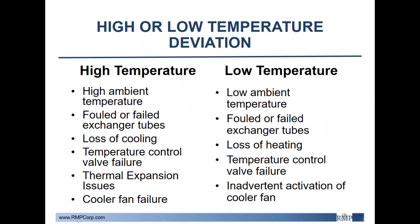Next is high or low temperature deviations. Causes for high temperature could include high ambient temperature, fouled heat exchanger tubes, loss of cooling, temperature control failure, thermal expansion issues within the tank, or cooler fan failure. In contrast, low temperature causes include low ambient temperature, fouled or failed heat exchanger tubes, loss of heating, temperature control failure, or inadvertent activation of cooler fans.